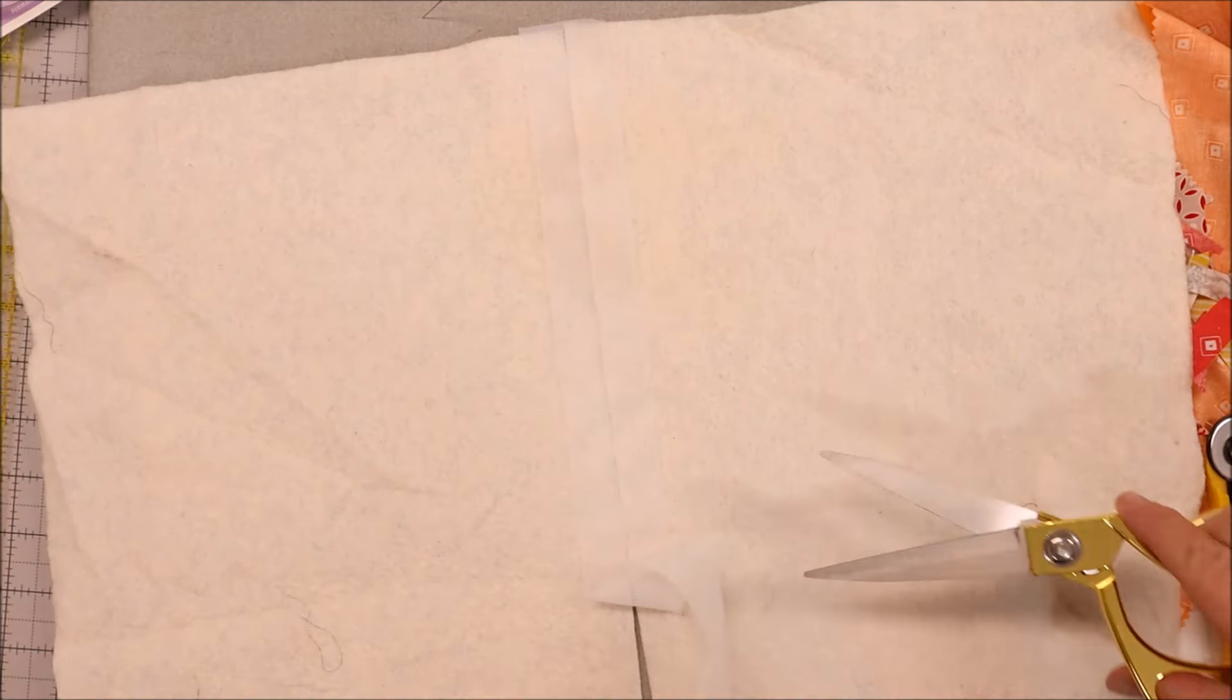This is the easy seam tape. This is one and a half inches and it is fusible. So I've got a pin here to keep it rolled. What you're going to do is remove this from the packaging and use this.